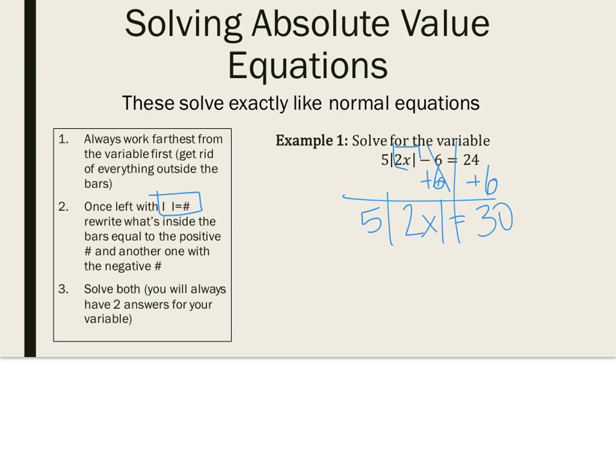Again, to get the absolute value by itself, I've divided everything by 5. It's left with the absolute value of 2x equals 6.